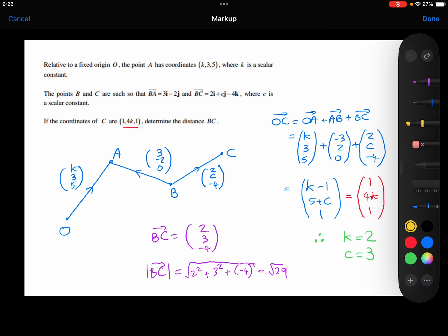We're then told that the coordinate of point C is (1, 4k, 1). So then I'm thinking, what's the position vector of C? Because that should be the same thing as that coordinate.